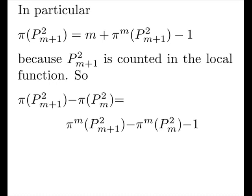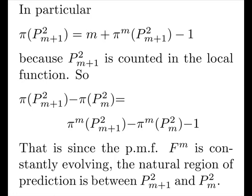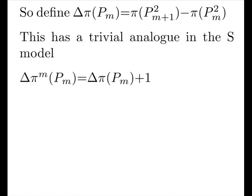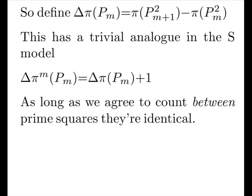So, the difference between prime squared is the same minus 1. That is, since the PMF, our f of M, is constantly evolving, the natural region of prediction is between successive prime squared. So, define an operator to measure this. We call it delta π of Pₘ, which obviously it's a function of Pₘ. This is a trivial analog in the S model. It's just off by 1. So, as long as we agree to count between prime squares, they're identical.